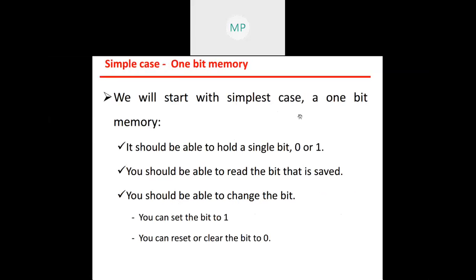We start with a simple case: a one-bit memory. It should be able to hold a single bit — either zero or one. You should be able to read the bit that is saved, and you should be able to change the bit — you can set the bit to one or reset/clear the bit to zero. These are the operations which should be performed by memory.